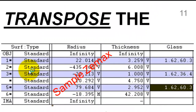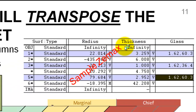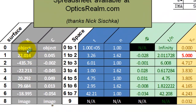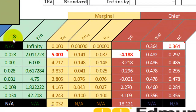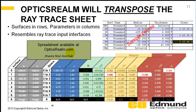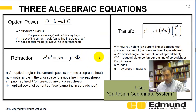It's more akin to what ray trace codes do. Here's a snapshot of Zemax's Cook triplet — each row is a different surface, and the parameters — radius, thickness, glass — are in the columns. So we have radius of curvature, inverse curvature, thickness, index, optical power (actually the negative of optical power), reduced thickness, and chief and marginal ray parameters. This will be on Optics Realm, and thanks to Nick Shishka for putting this together.